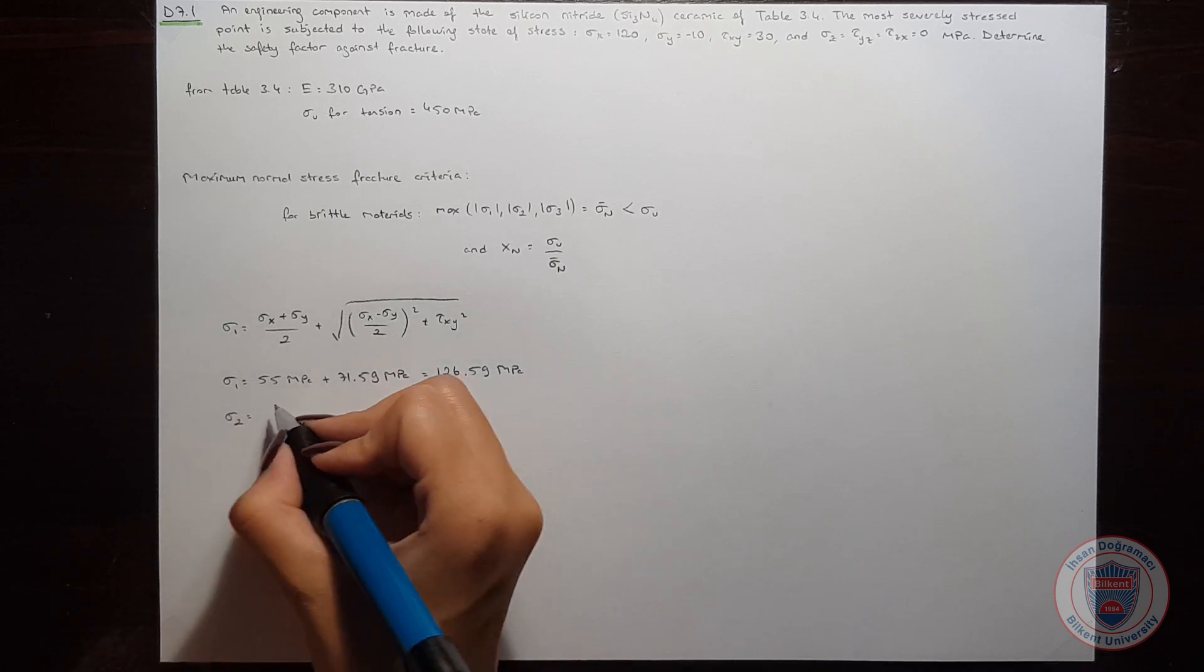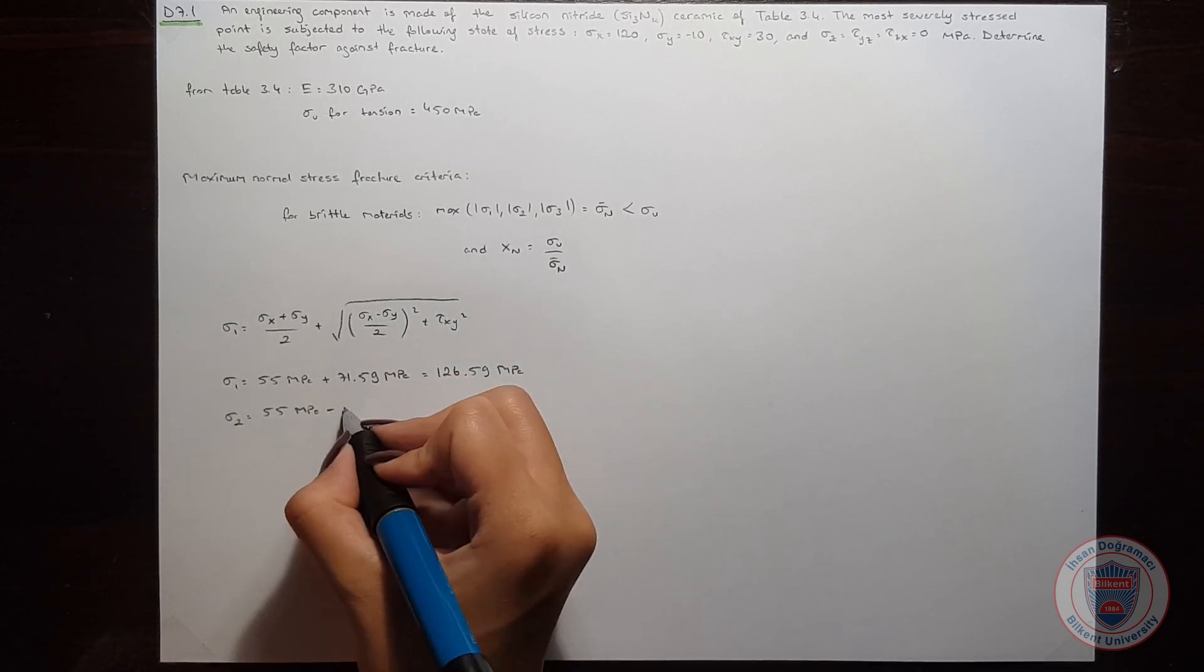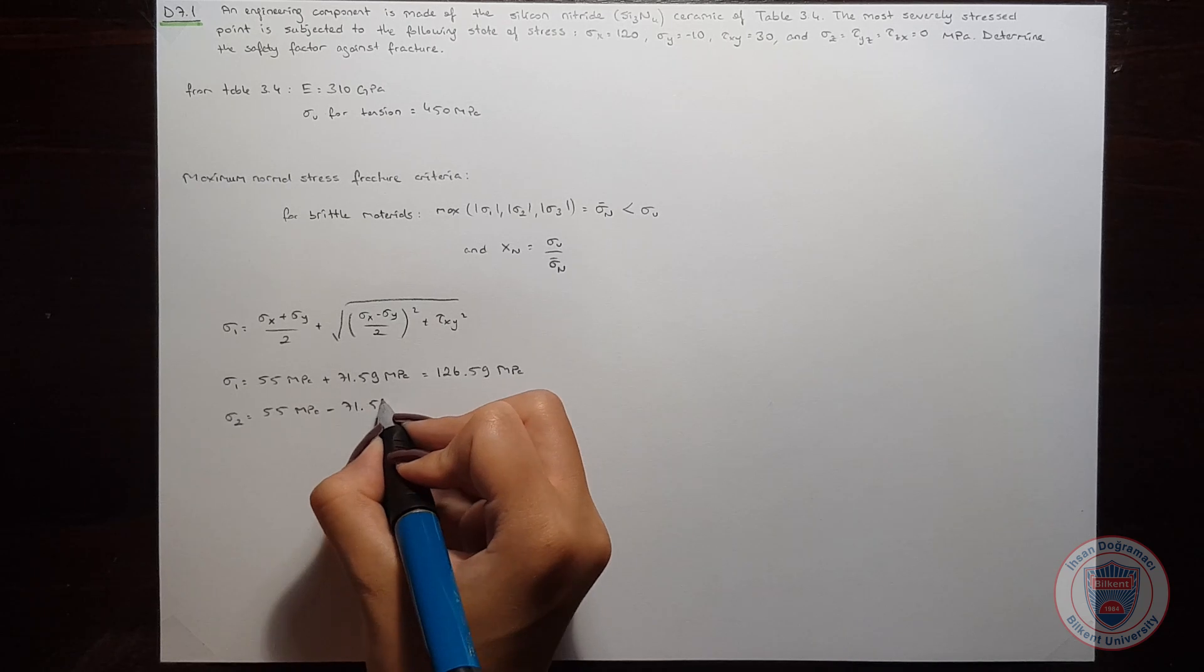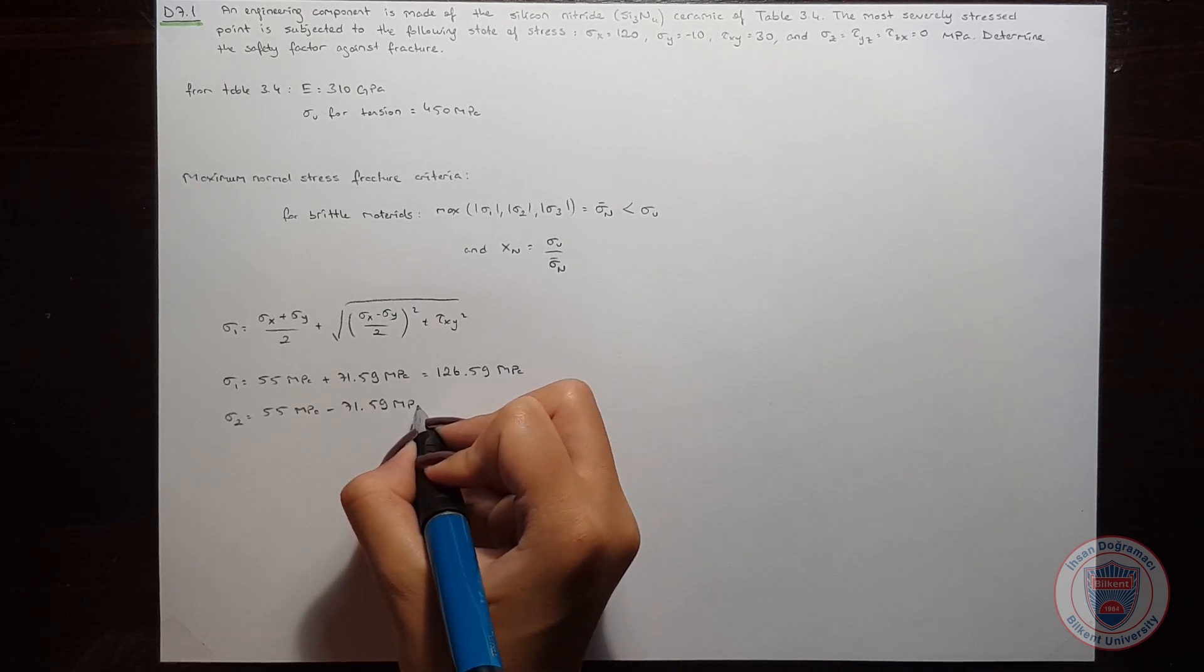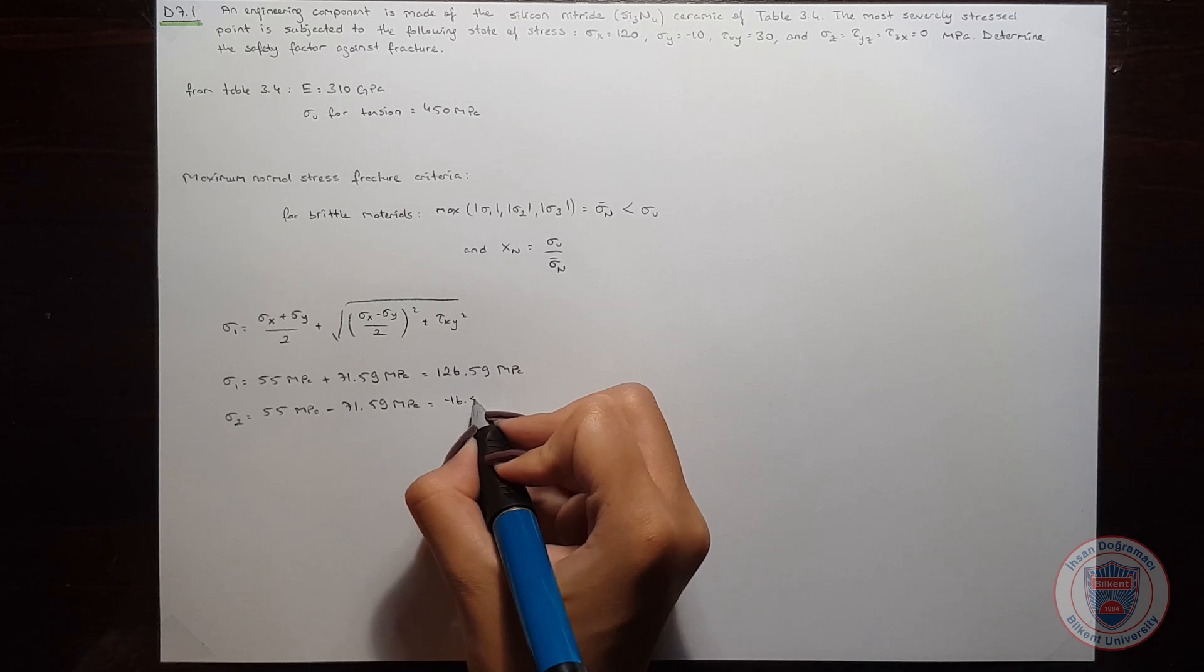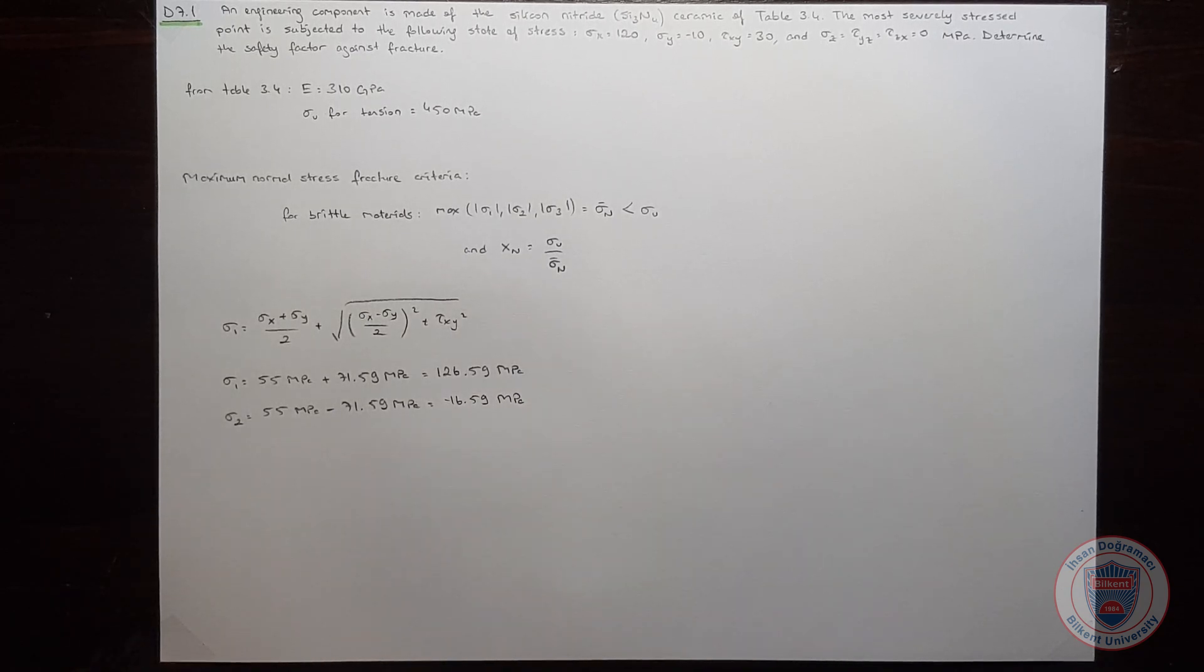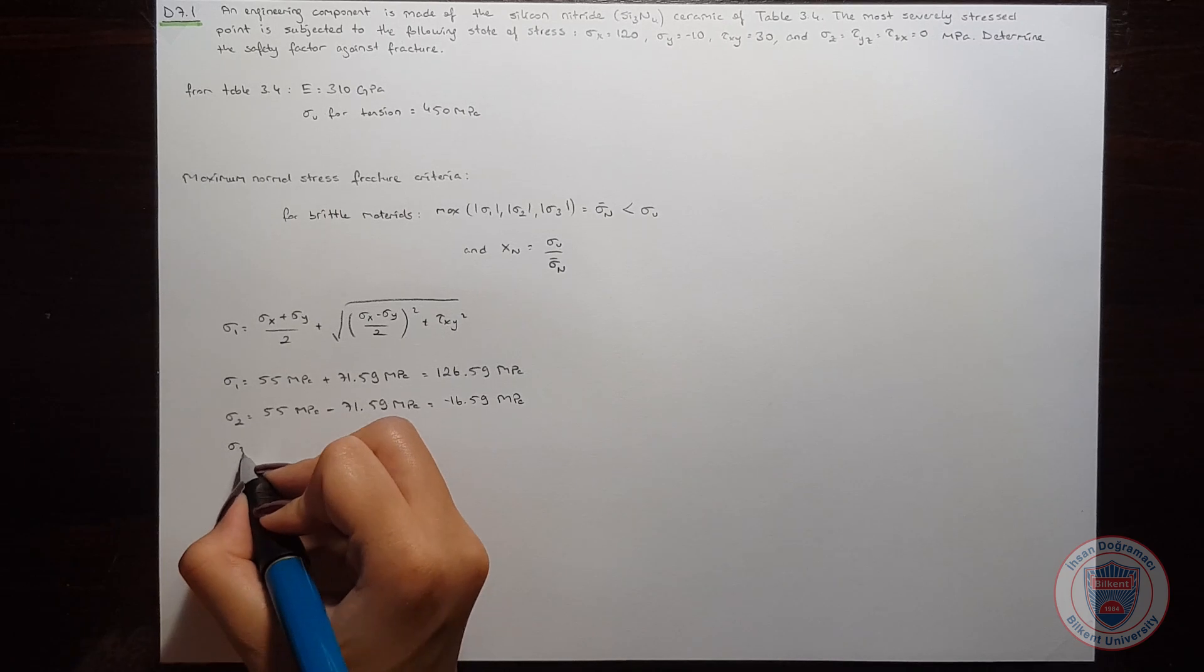Sigma 2 will be 55 MPa minus 71.59 MPa, and it will give minus 16.59 MPa. And finally, we know that sigma 3 is 0.